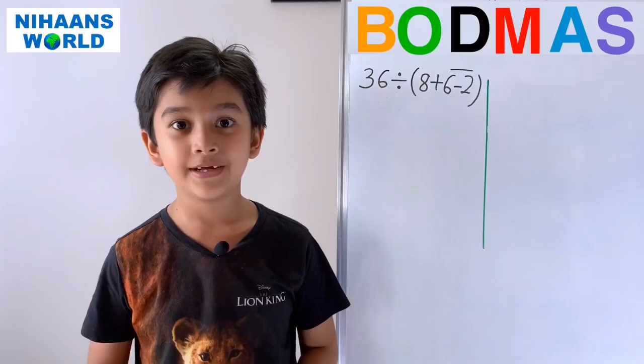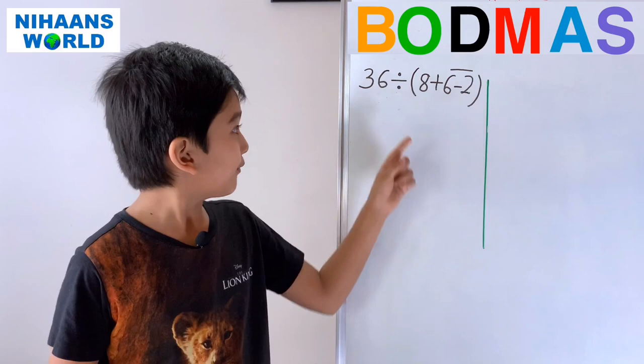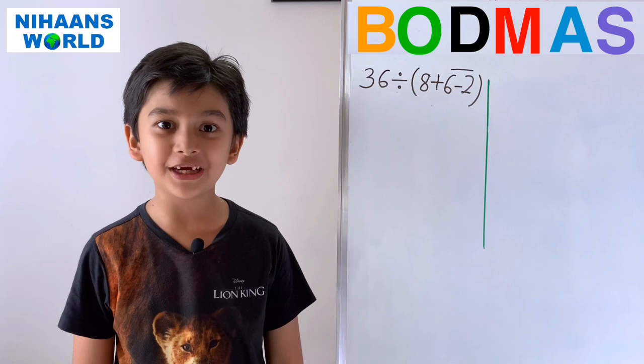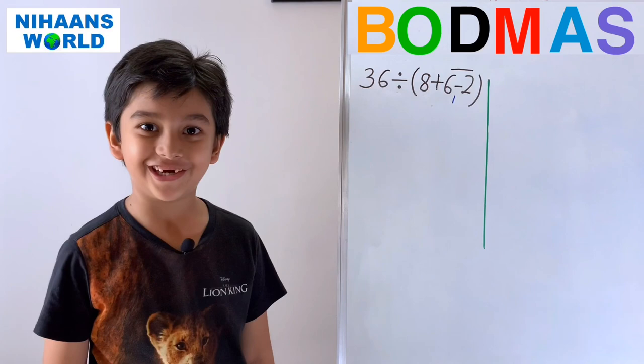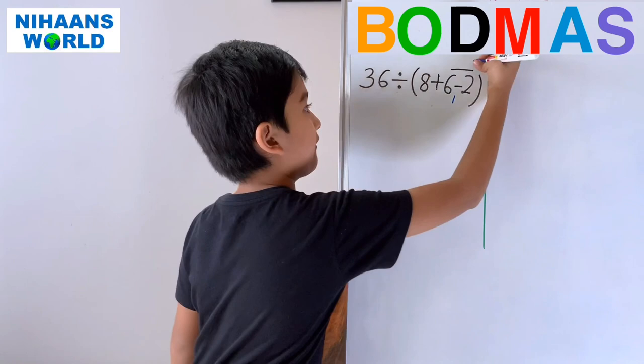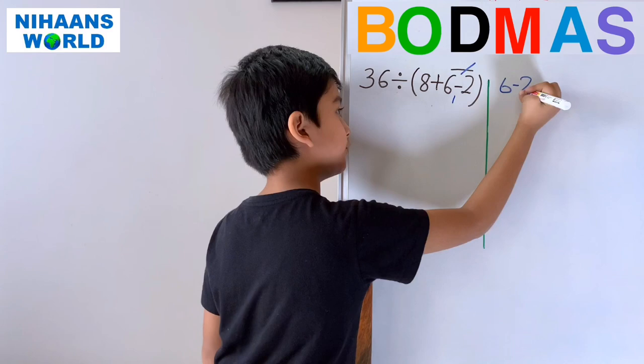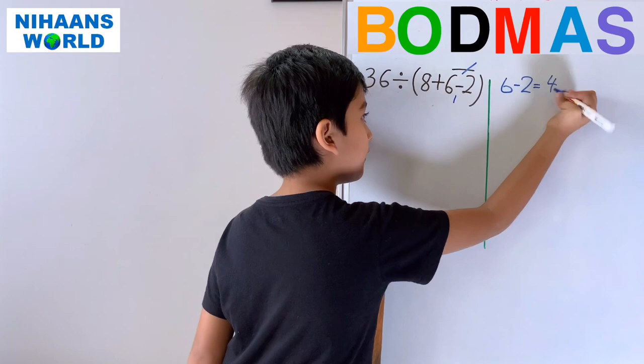Friends, let's solve some examples with brackets and bars. Friends, which operation we should do first? Division, bracket, or bar? Friends, you are right. First, we have to do bar operation. So we have to remove the bar. Okay? So what is 6 minus 2? It is 4. Now we have done this.